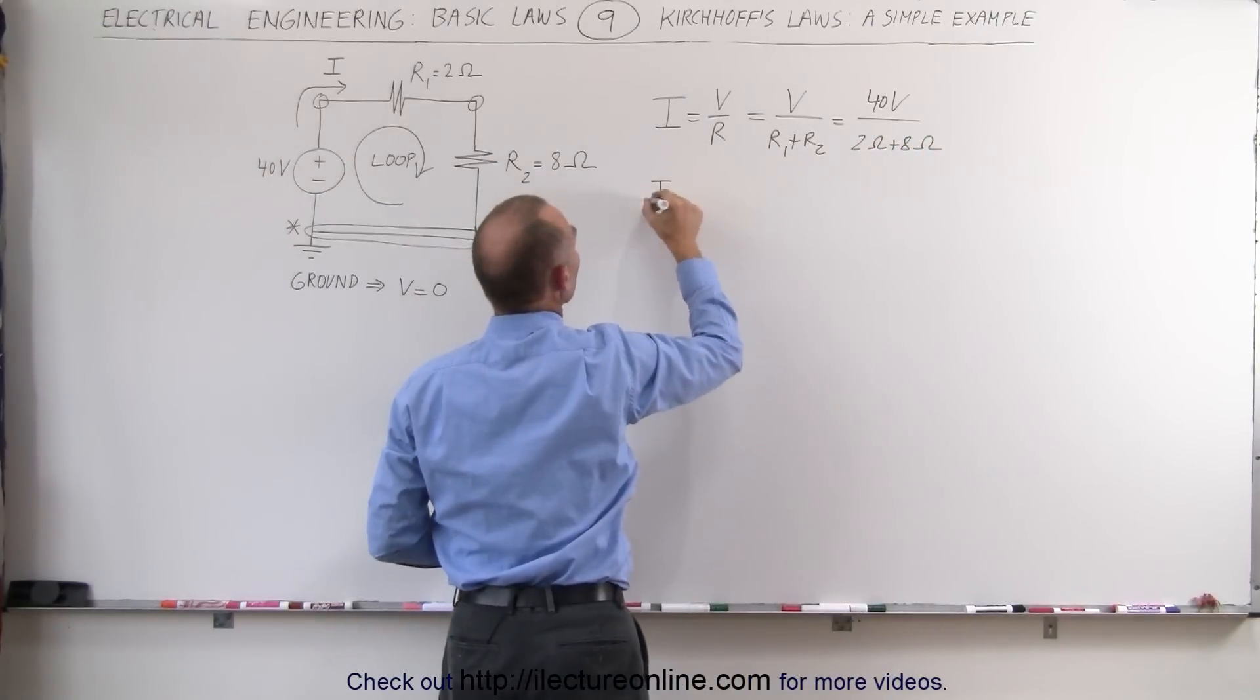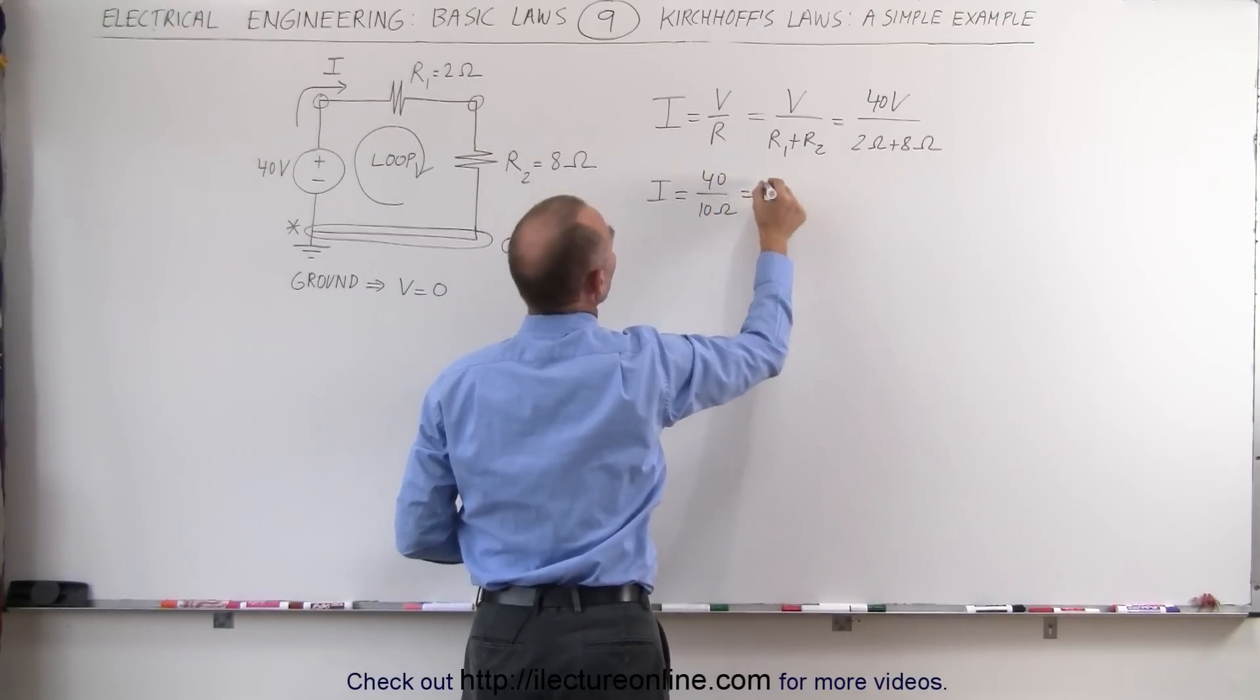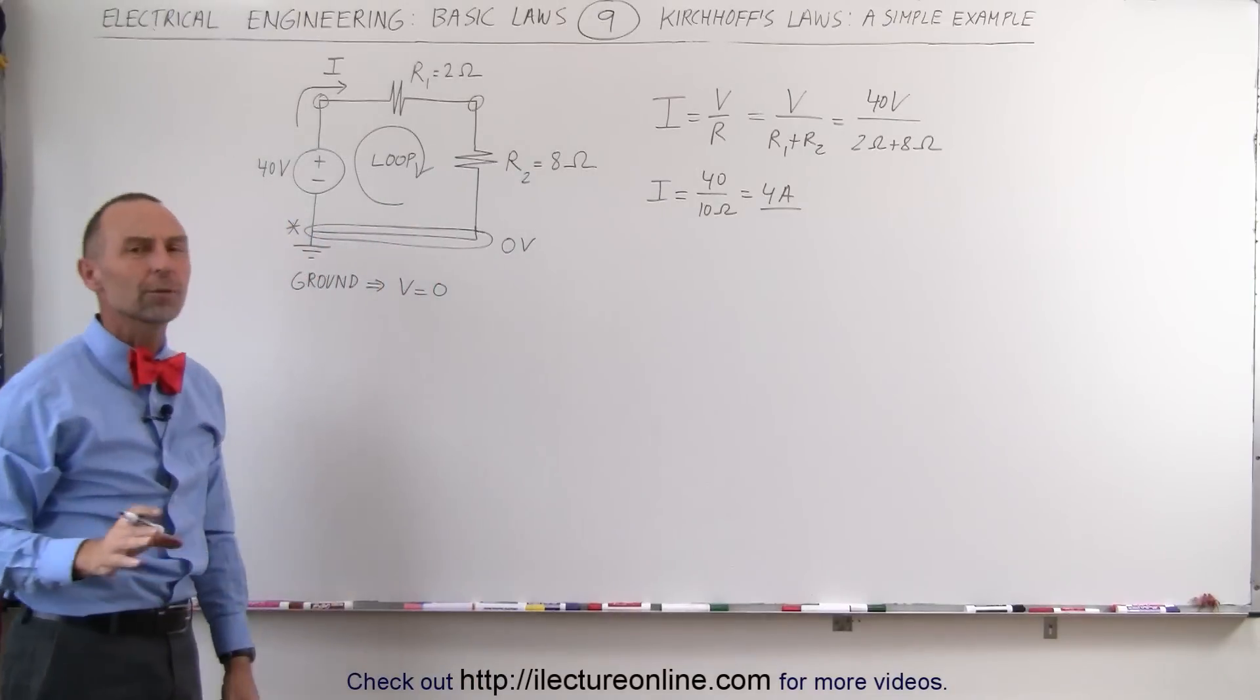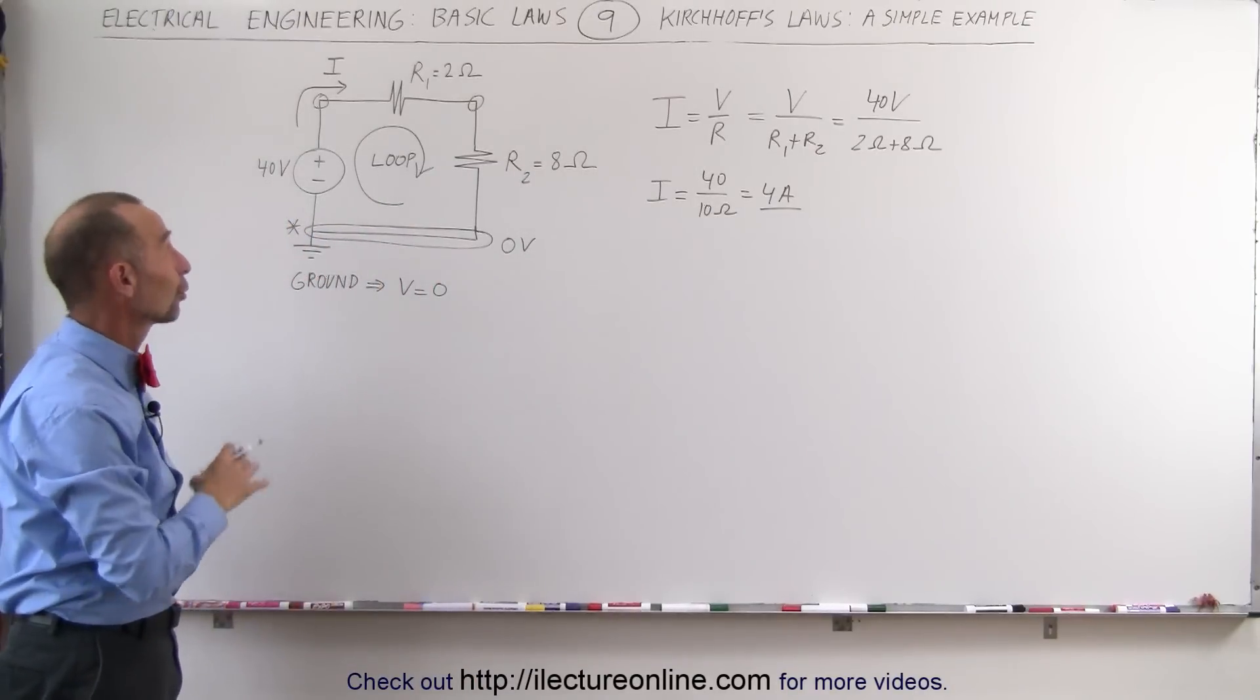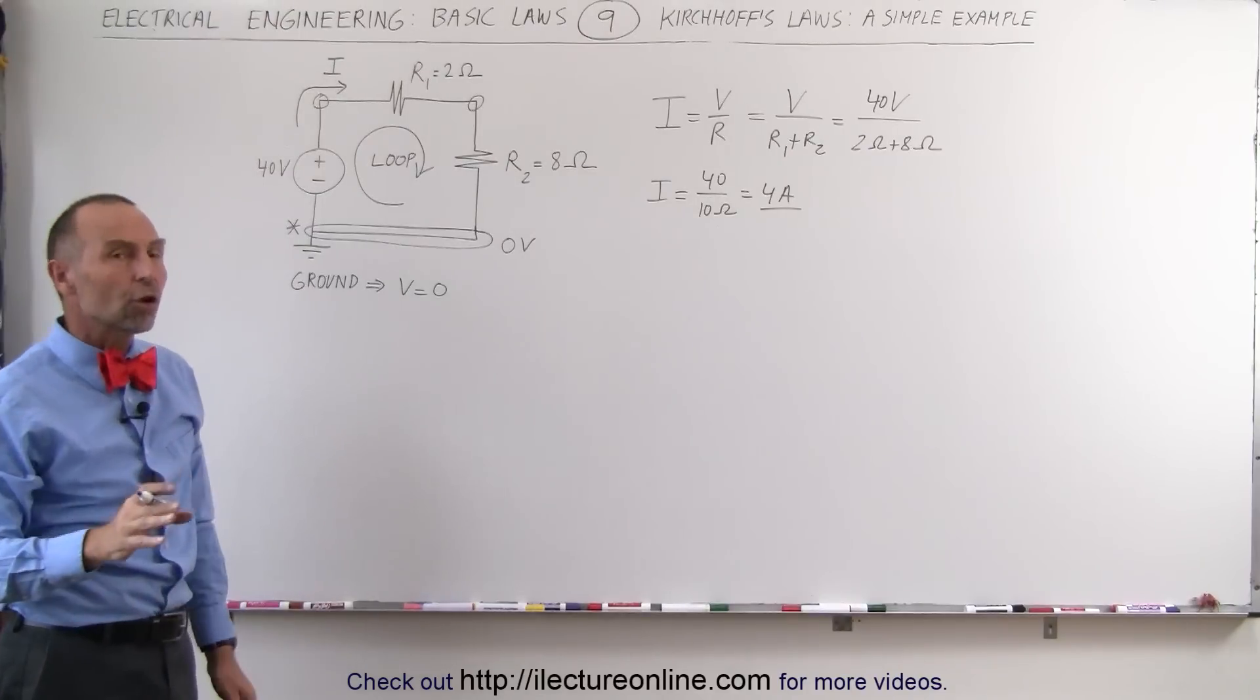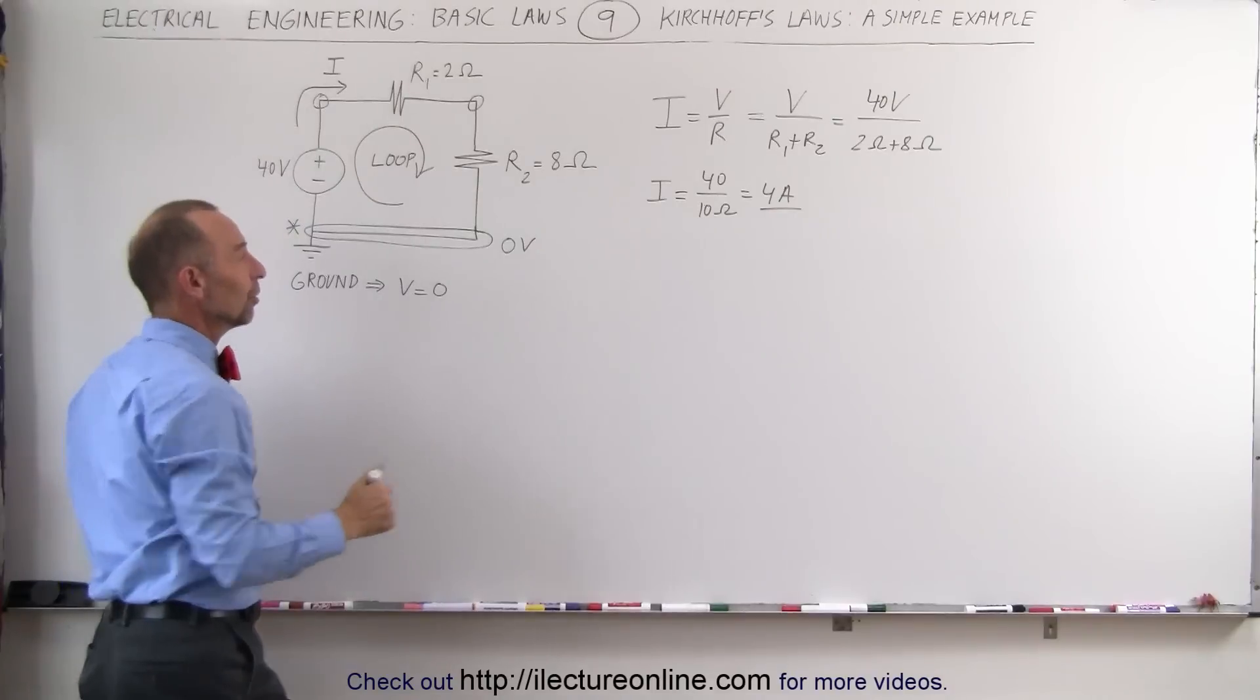Finally, we can say that the current in the circuit is equal to 40 volts divided by 10 ohms, which is equal to 4 amps. We have a 4 amp current flowing through the circuit. We did not need Kirchhoff's rules or Kirchhoff's Laws to figure that out.